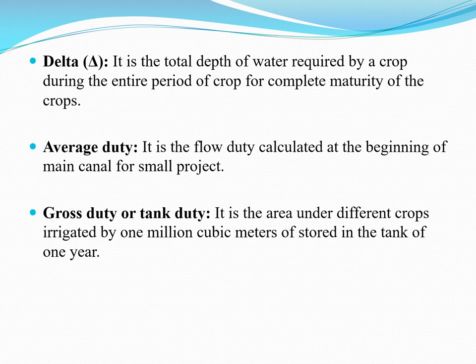Next is average duty: it is the flow duty calculated at the beginning of the type of canal or main canal for a small project. It is always less than duty because all types of losses are taken into account. Next is gross duty or tank duty: it is the area under different crops irrigated by one million cubic meters of water stored in a tank in one year.